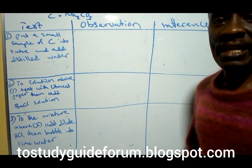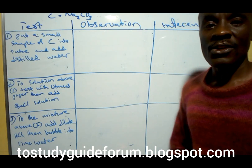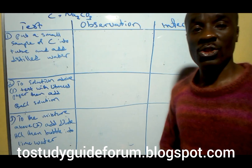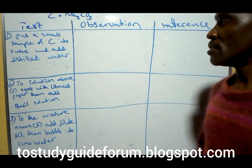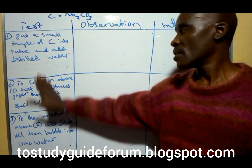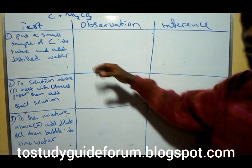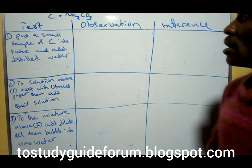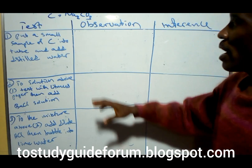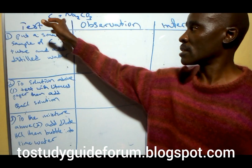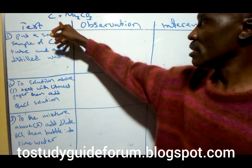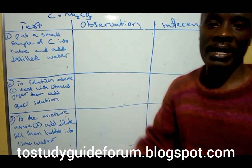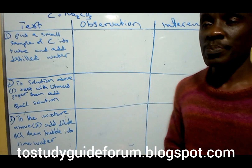We are going to analyze sodium carbonate, also known as sodium carbonate. The sample of salt to be analyzed is represented by the letter C, meaning sodium carbonate is represented by the letter C.